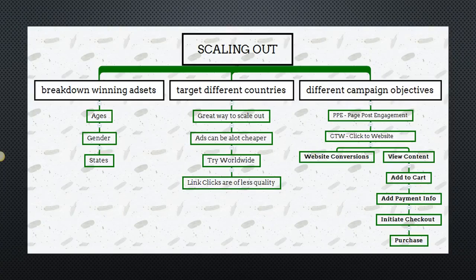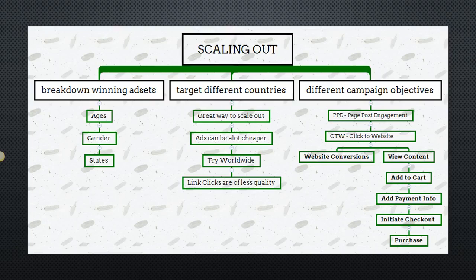Another way to scale out is by targeting different countries. You can find countries that are gold mines where ads are much cheaper — the CPM will be lower because people aren't advertising as heavily there as in the US, Canada, or Australia. Another option is to target worldwide and hit the entire globe. Facebook has over a billion users, and if your product is relevant to them, you may have a winner.